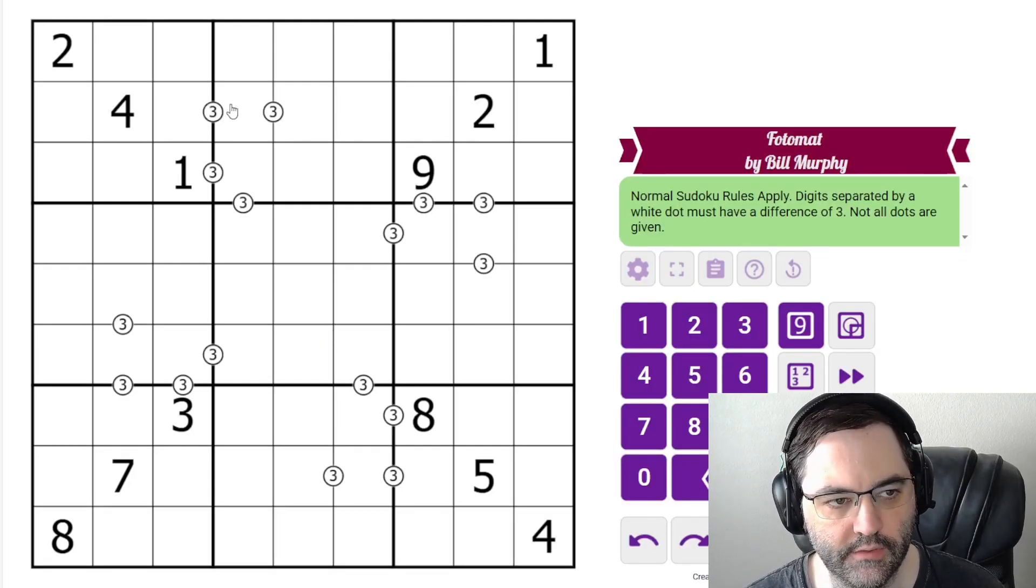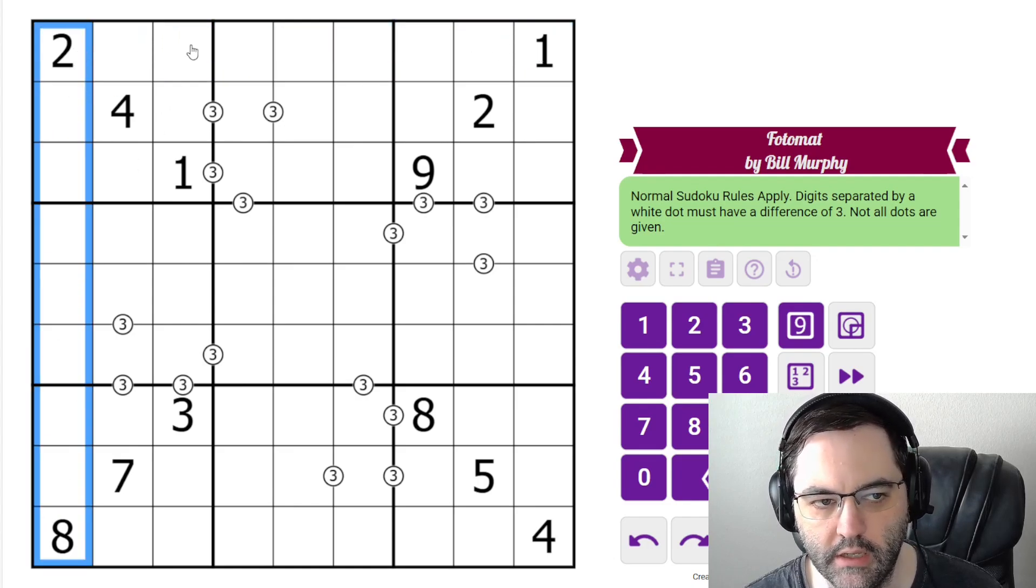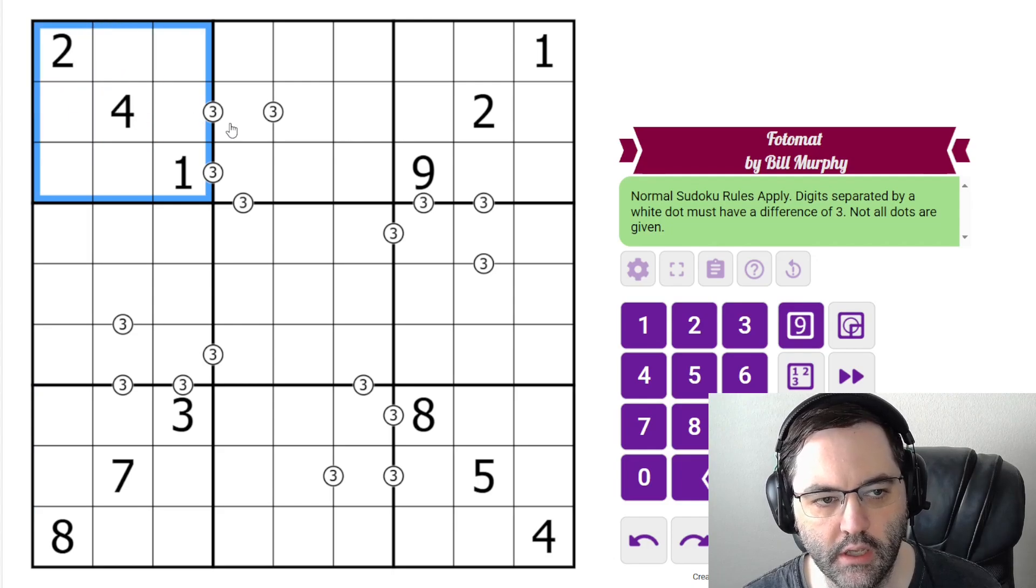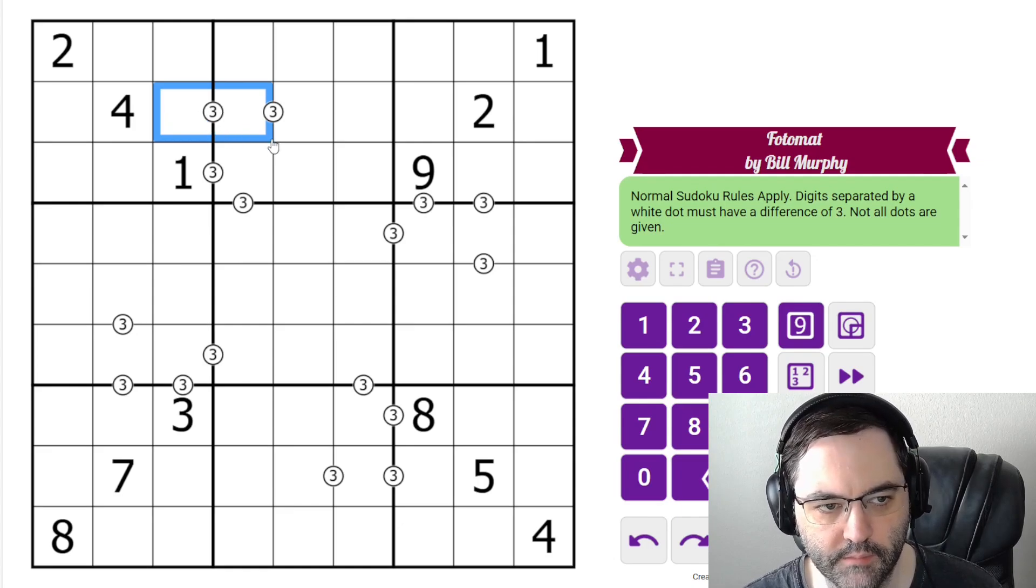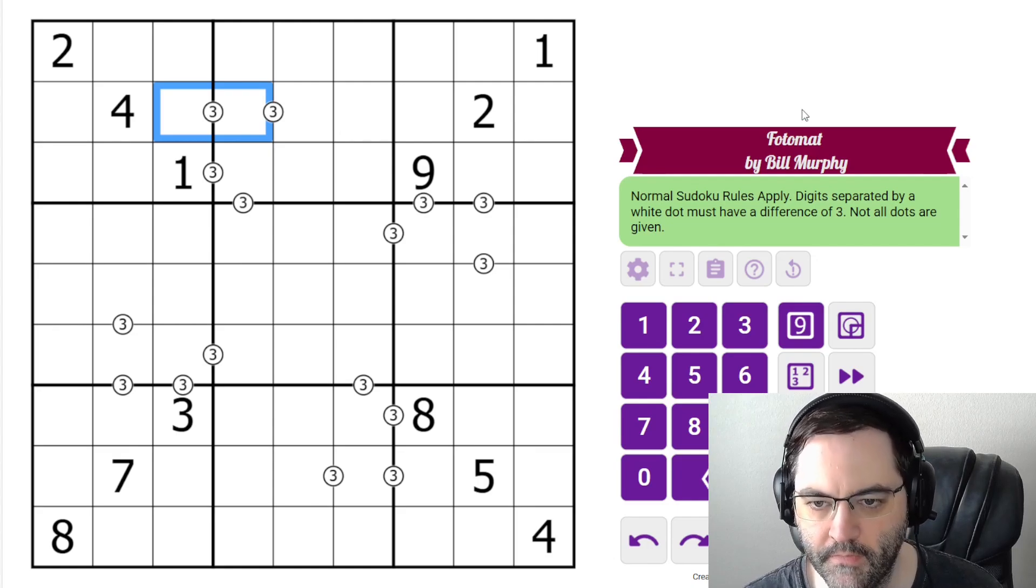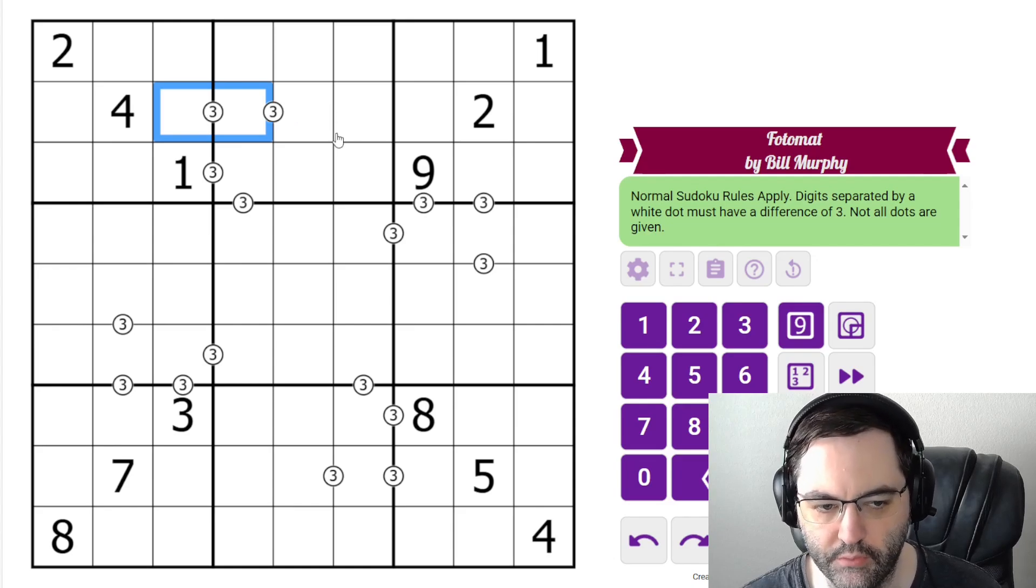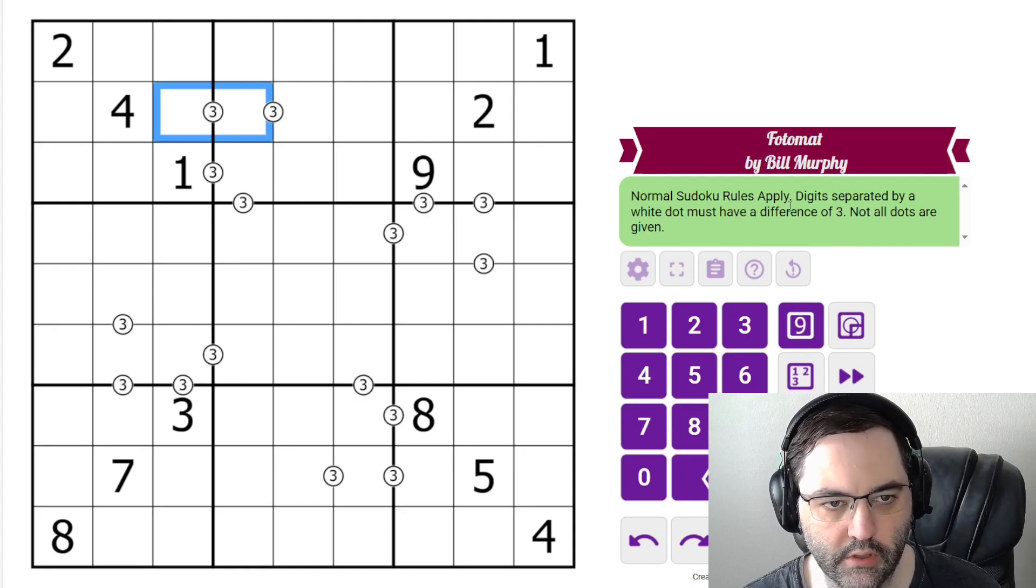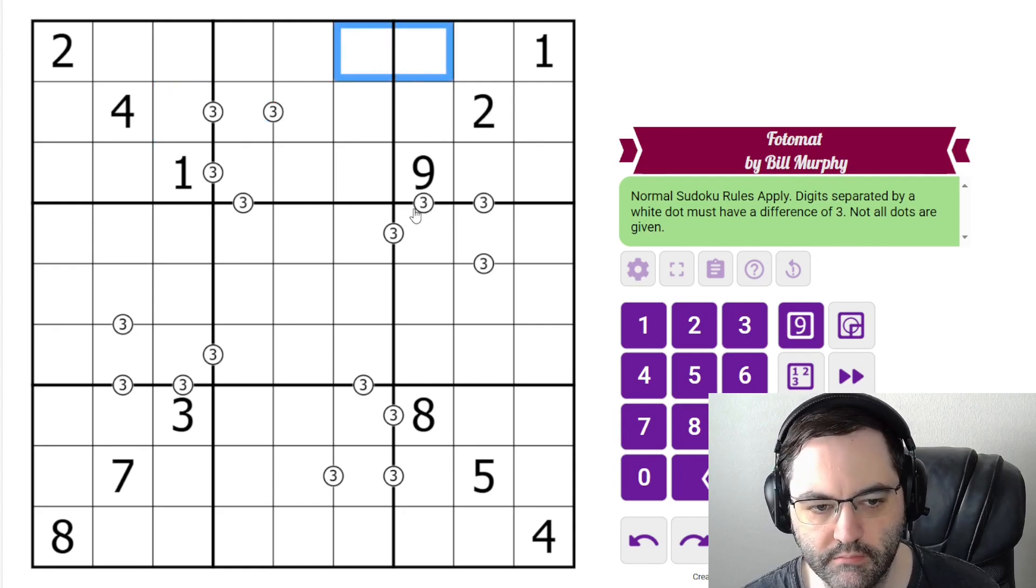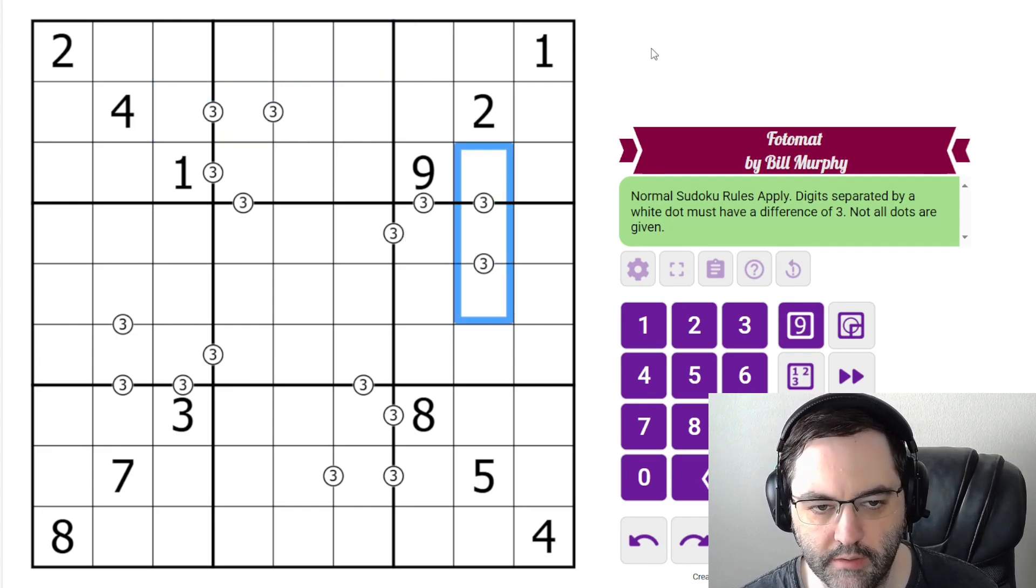Today I'm solving Photomat by Bill Murphy. This is a difference pair of Sudoku. We have normal Sudoku rules, one to nine in each row, column, and three by three box. Additionally, we have some clues in the grid. All of the clues are white dots between two cells, and all of the clues in this puzzle contain a three. And what they're telling us is that the digits in the cells have a difference of three. And that's it. Those are the rules. No negative constraint. There could be other pairs of digits that differ by three. We just have to use the information that Bill gives.